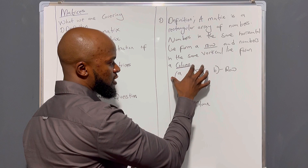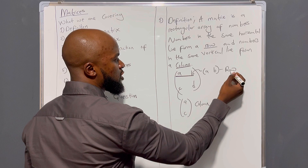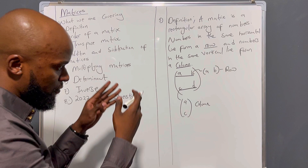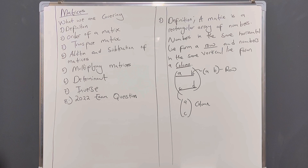Let's say we have matrix x with elements a, b, c, d. How many rows do you see? A, b is one row and c, d is another row. For columns — we said vertical — so a, c is a column and b, d is also a column. That is the definition.